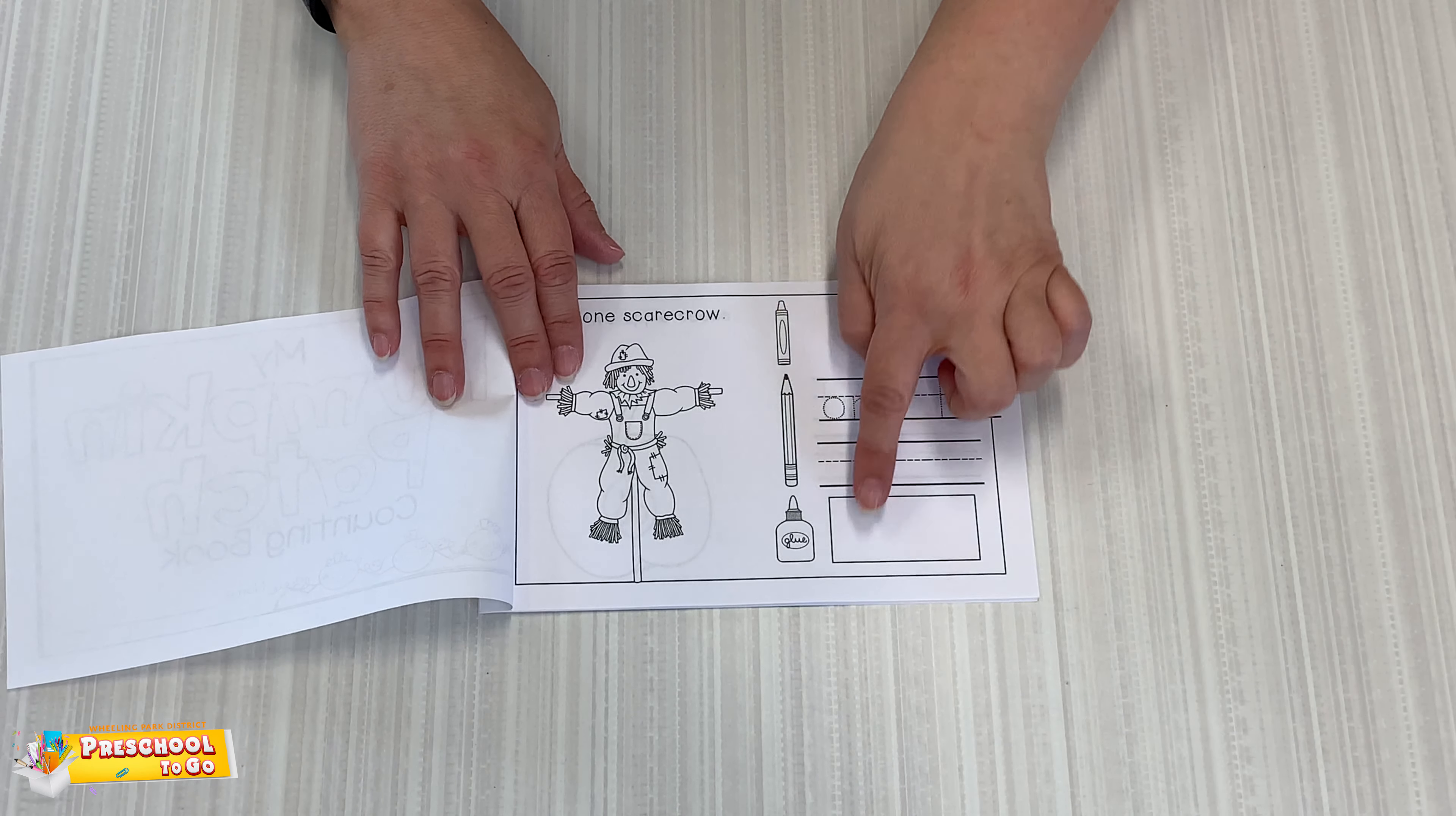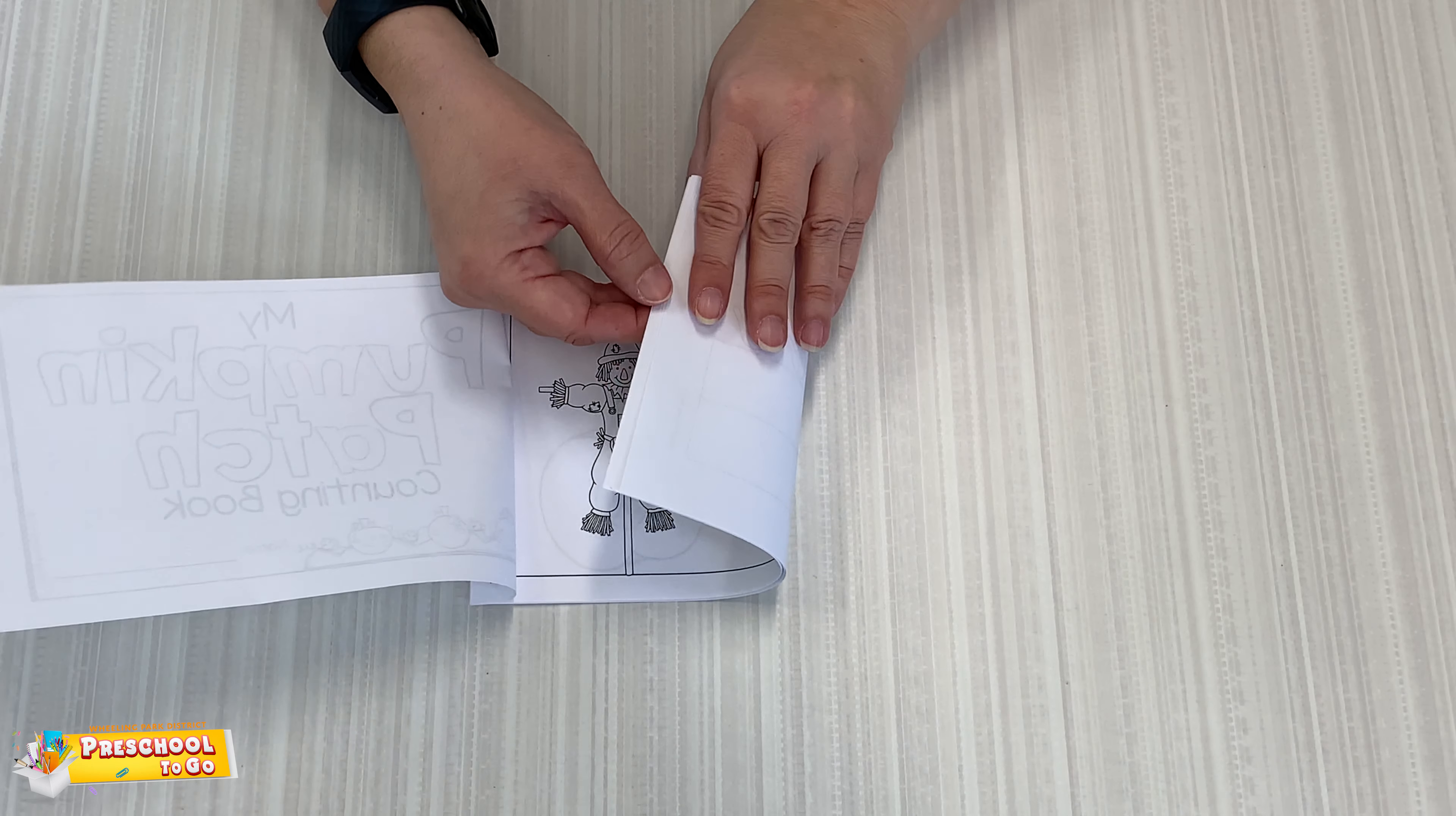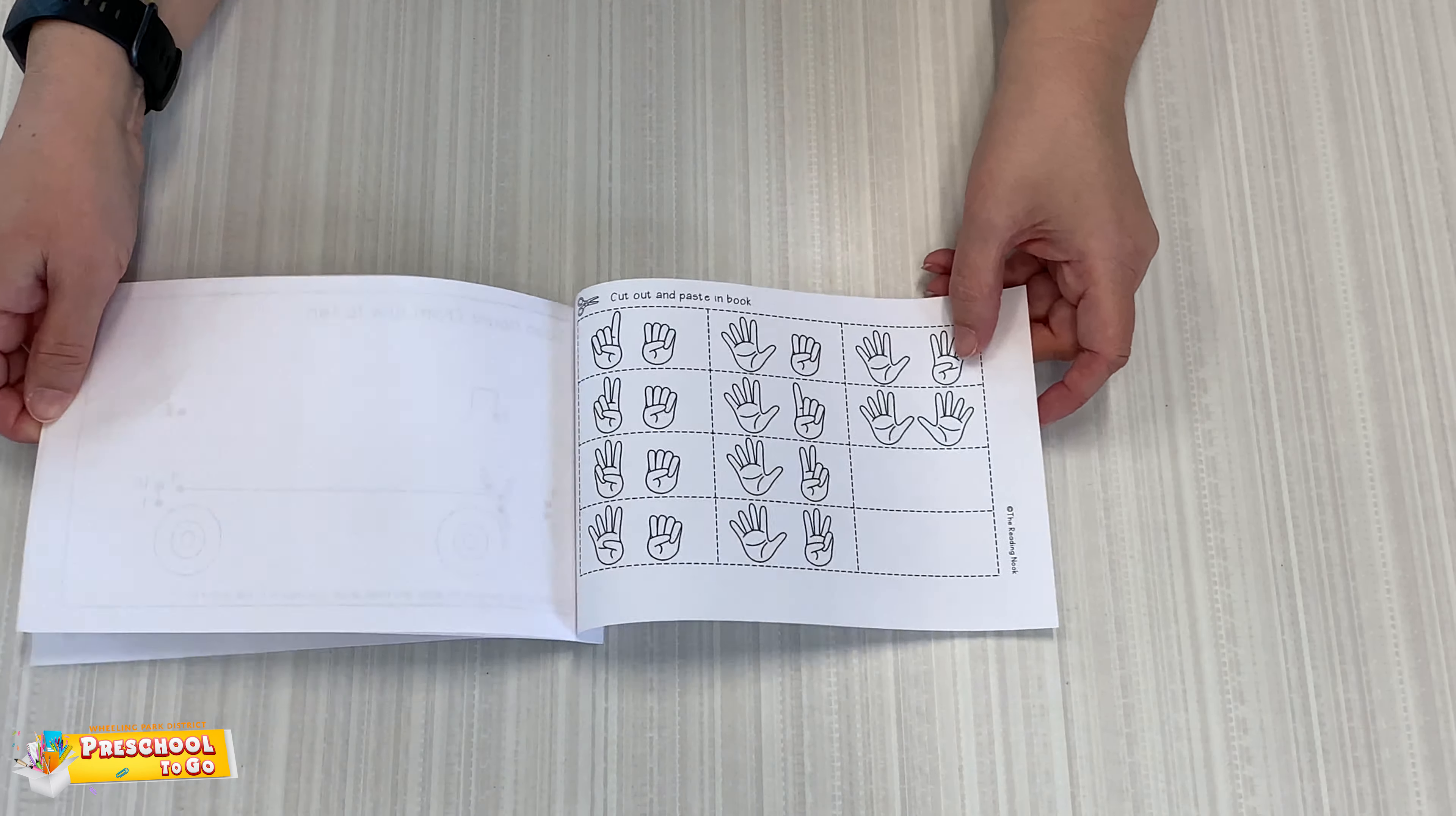So inside here, there's different pages and there's a little spot here. If you go to the end of the book, there are fingers that you can count. It says cut out and you're going to put it inside the book.